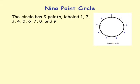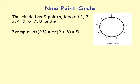We introduce the 9-point circle: a circle with 9 points labeled 1 through 9. Because digit sums repeat with period 9, we can visualize the sequence 1, 2, 3, 4, 5, 6, 7, 8, 9 arranged around this circle.